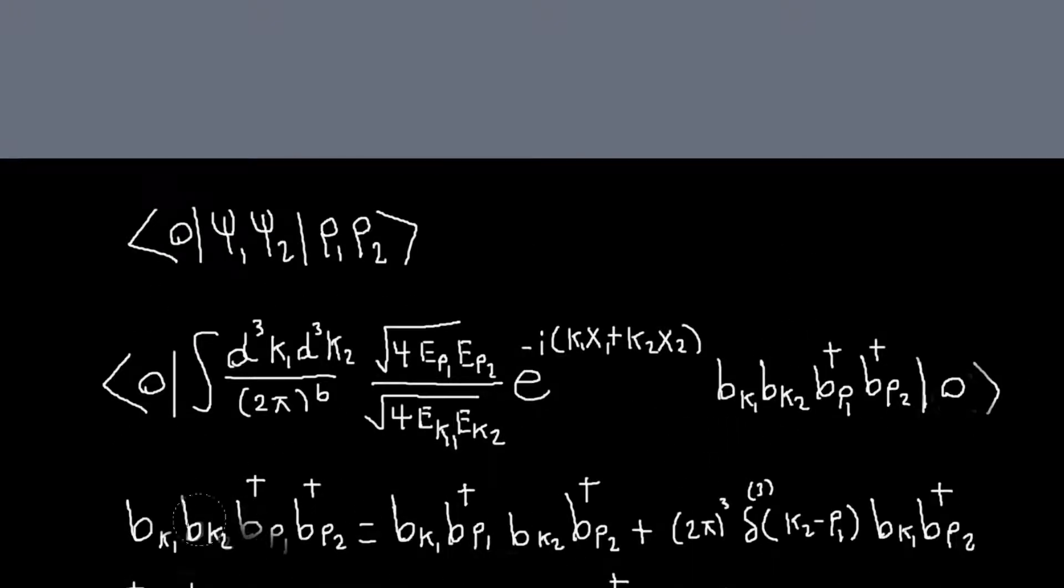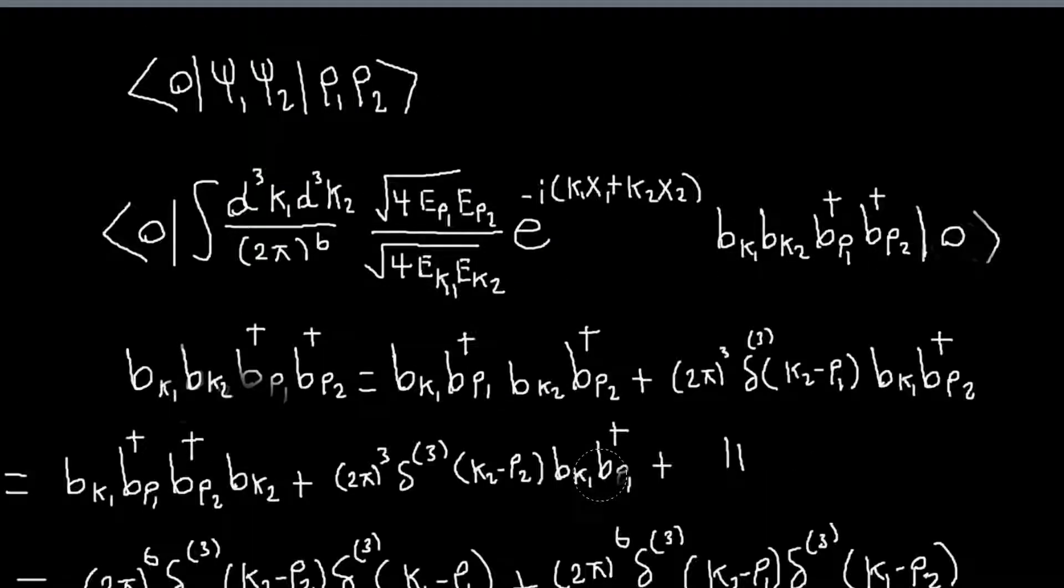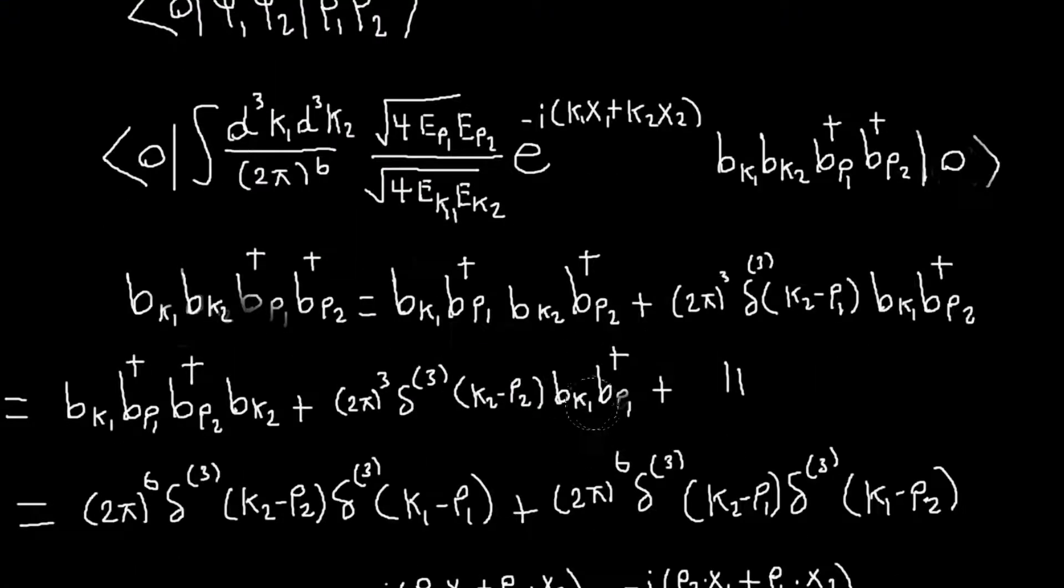And you basically just have to do a lot of commuting here. So I need to commute both of these lowering operators past these raising operators to get to this vacuum state, to annihilate. So you can do that, work it out, kind of one commutation at a time, just picking up these 2 pi cubed and deltas. I'm not going to, that's something you should probably work through on your own, and you can convince yourself that in the end, the only non-zero terms, or the only terms that are left, will go like 2 pi to the 6, and then these delta functions involving certain momentum terms.